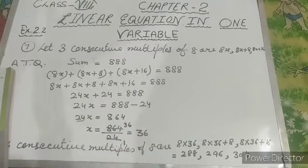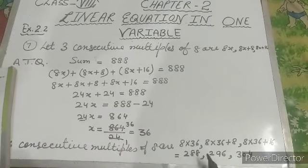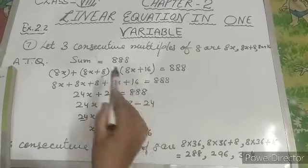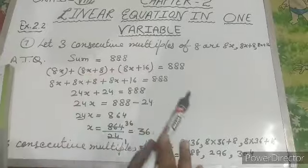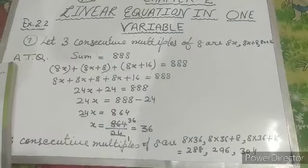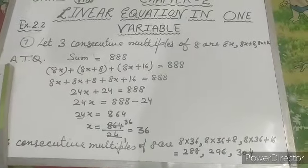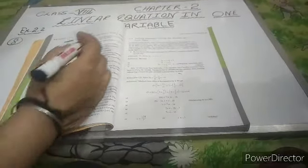To check our answer, when we add these three numbers — 288, 296, and 304 — we get 888. You can verify this answer. Our next question is question number 8.